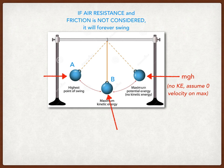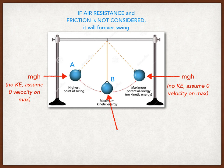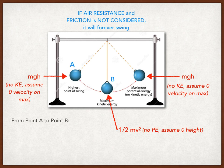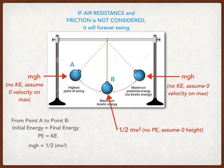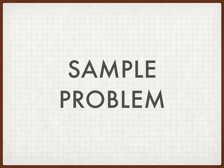For a simple pendulum from point A to point B: if air resistance and friction are not considered, it will swing forever. At point A, the pendulum is not moving — no kinetic energy, assume zero velocity at maximum height. At point B, we have ½mv², no potential energy, and we assume zero height. So initial energy equals final energy, which gives potential energy equals kinetic energy: mgh equals ½mv². Cancelling mass on both sides, the final formula is: g times h equals v² at point B. This gives us how to solve for velocity.